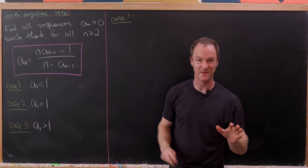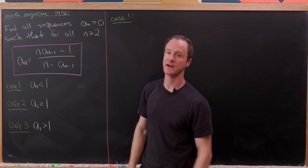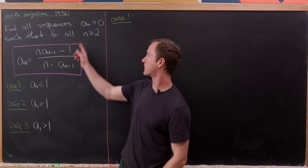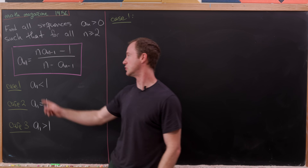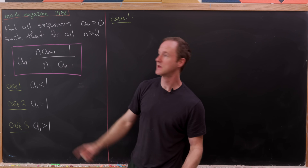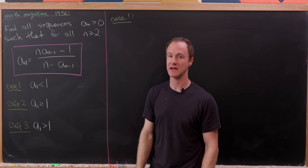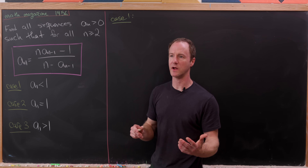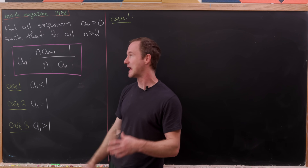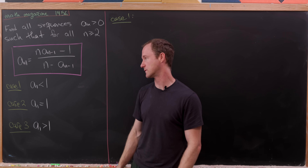Today we're going to look at a pretty cool recursively defined sequence problem. Our goal is to find all sequences of positive real numbers such that for all n greater than or equal to 2, we have the recursion: aₙ = (n·aₙ₋₁ - 1)/(n - aₙ₋₁). Here a₁ is the seed for the sequence, a₂ is defined in terms of a₁, a₃ in terms of a₂, and so on.